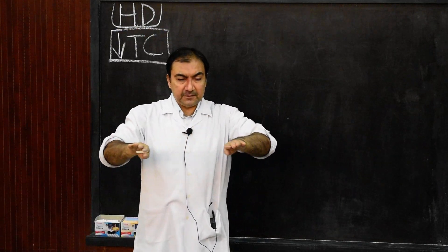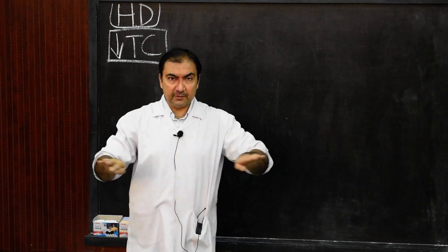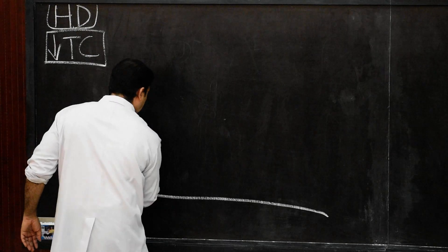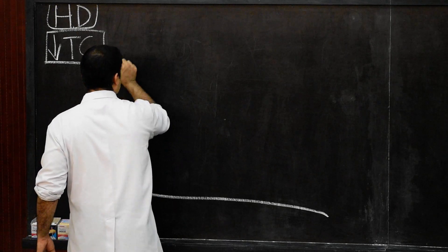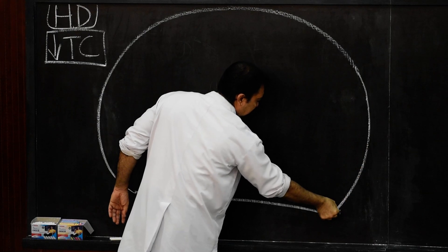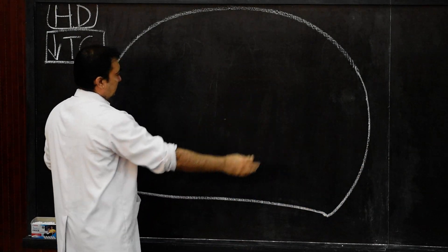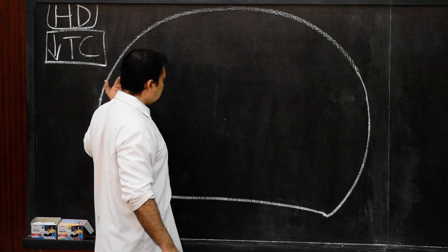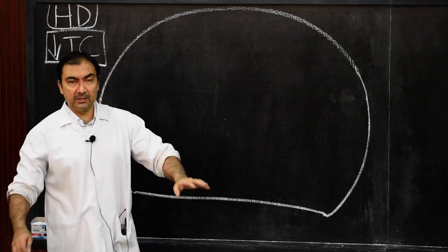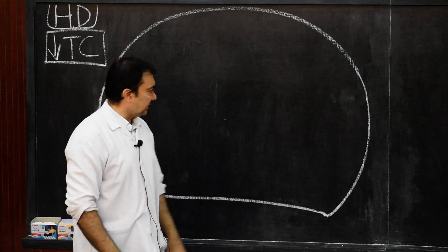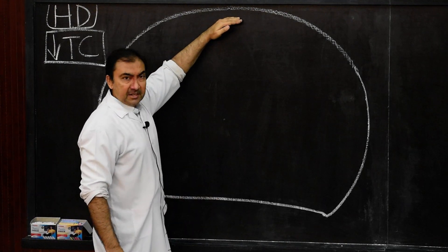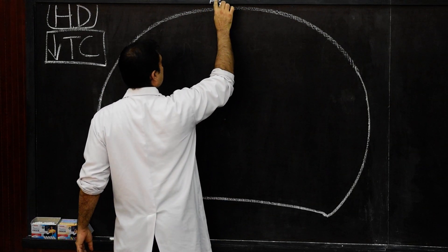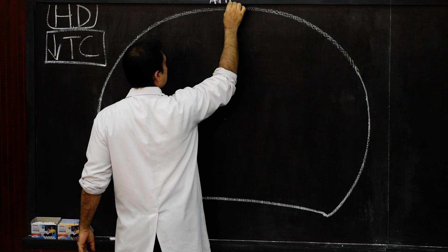We start with the horizontal disposition of the greater sac below the level of transverse colon and we draw the posterior abdominal wall, then the lateral abdominal wall, anterior abdominal wall and once again the lateral abdominal wall. This is the entire cross section, transverse section below the level of transverse colon.